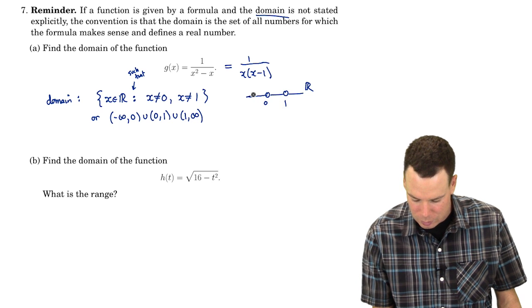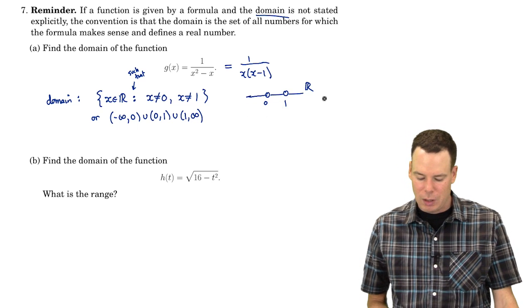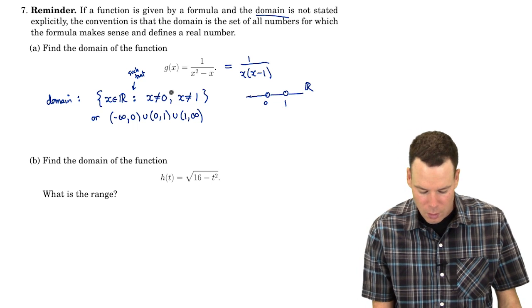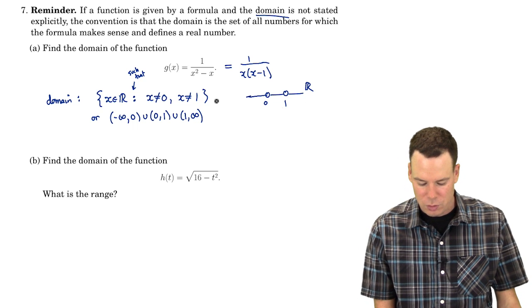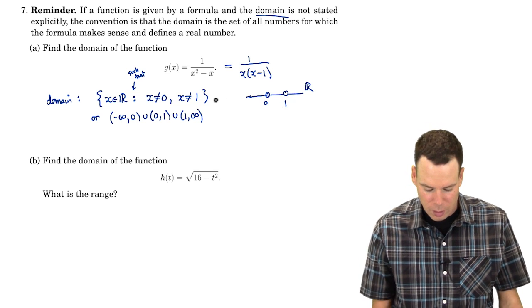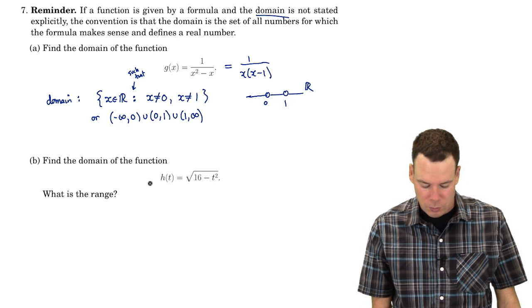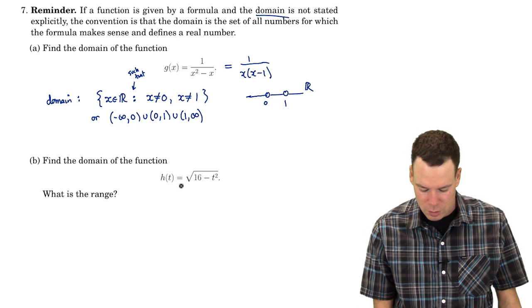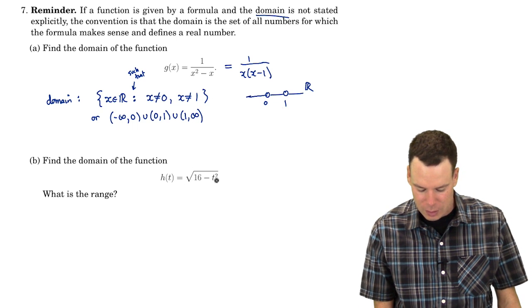So there are three intervals that make up that set, or you could write it in set builder notation, which I prefer. That's our domain. What about this next function? We want to find the domain of h(t) = √(16 - t²).